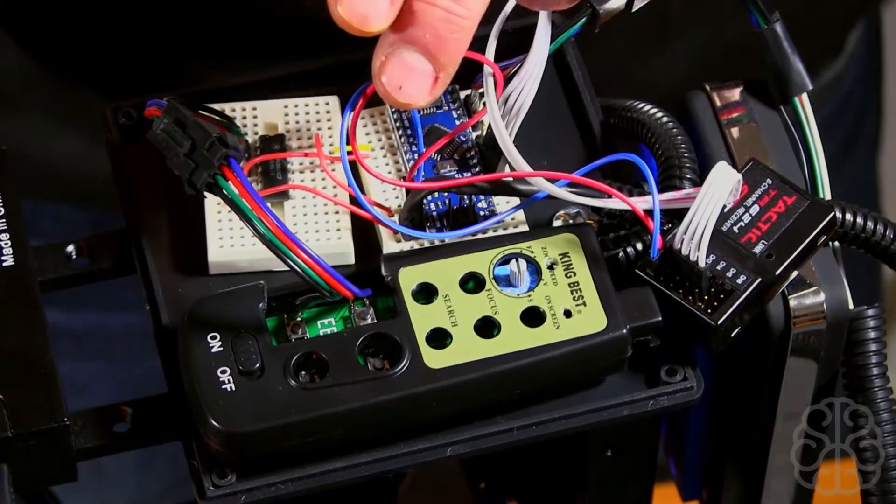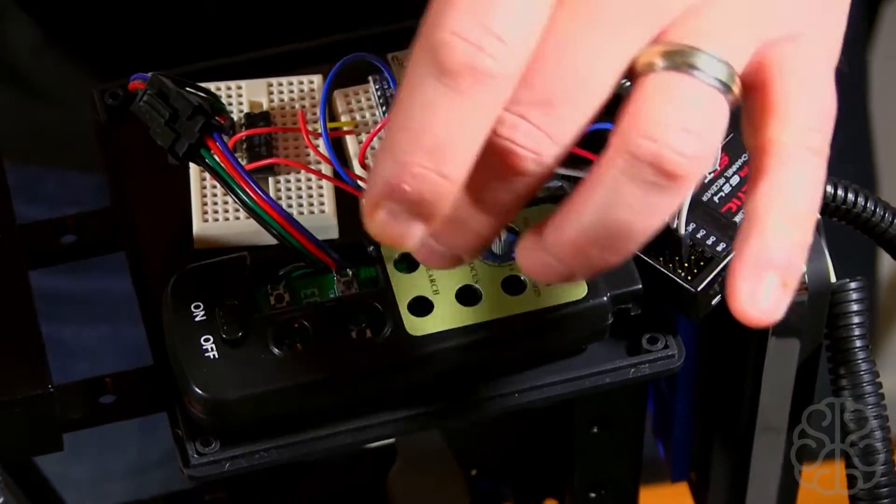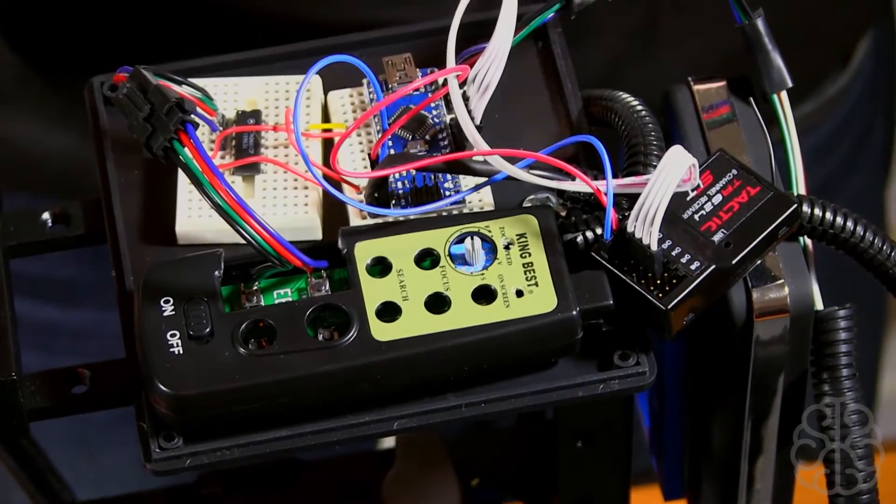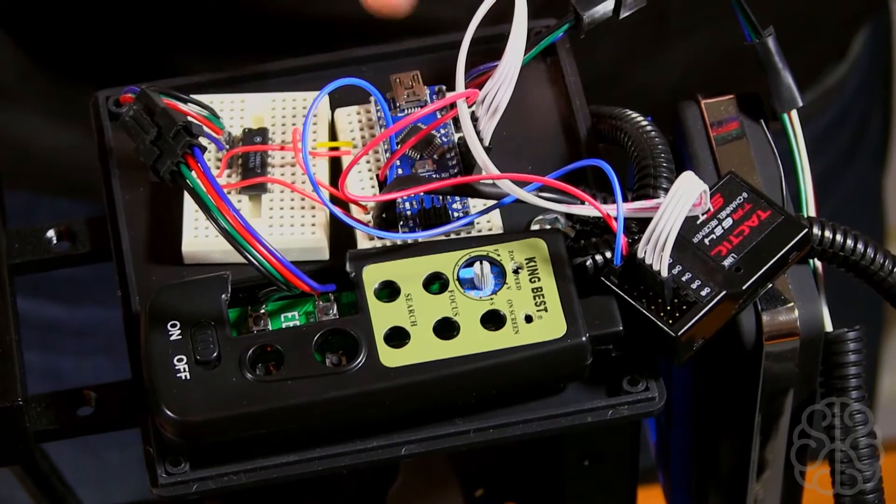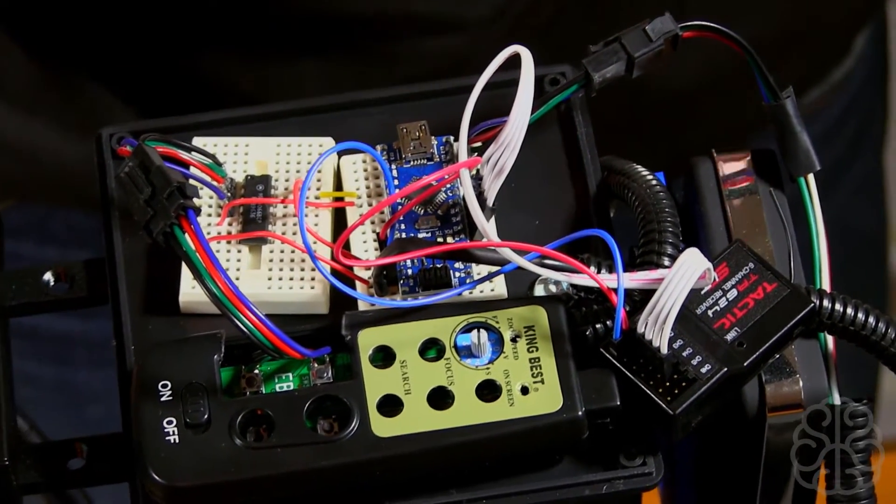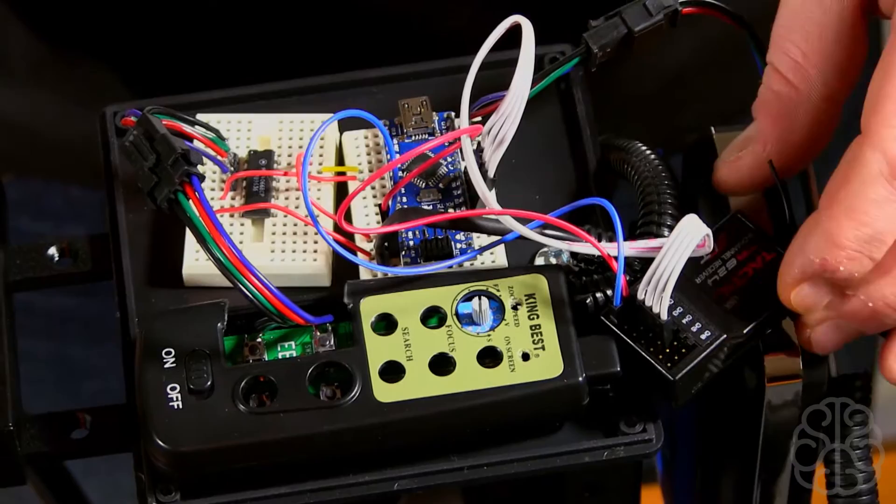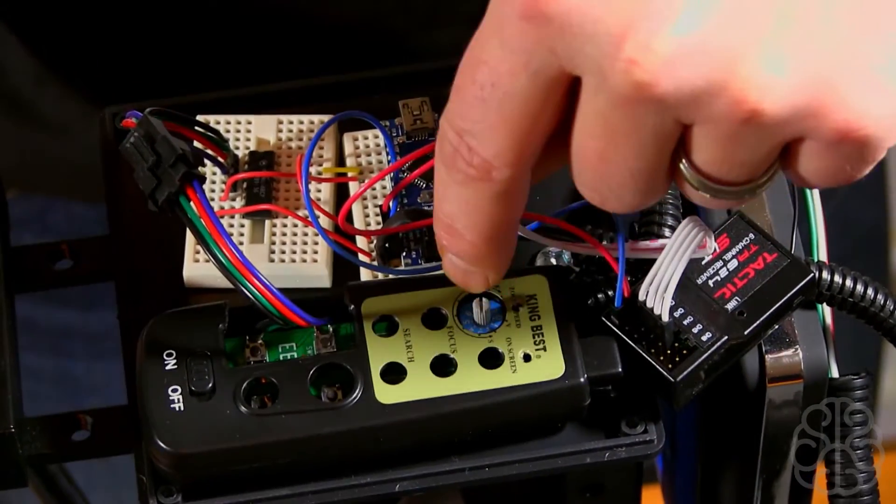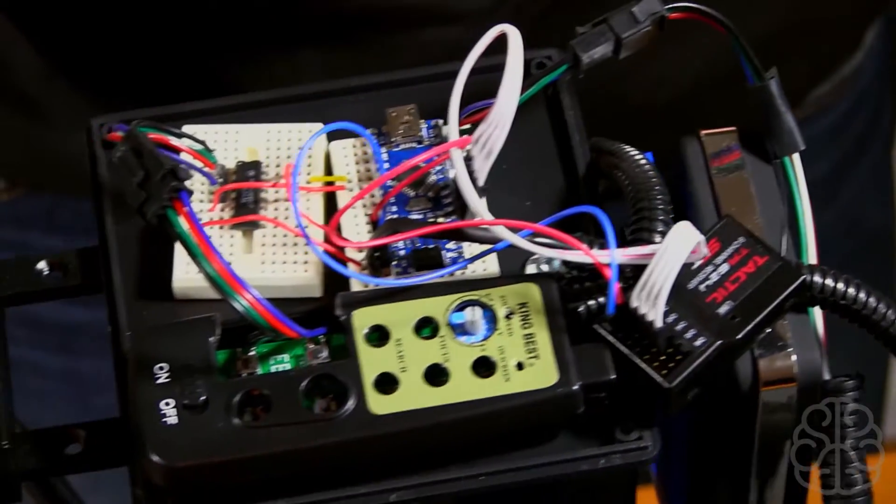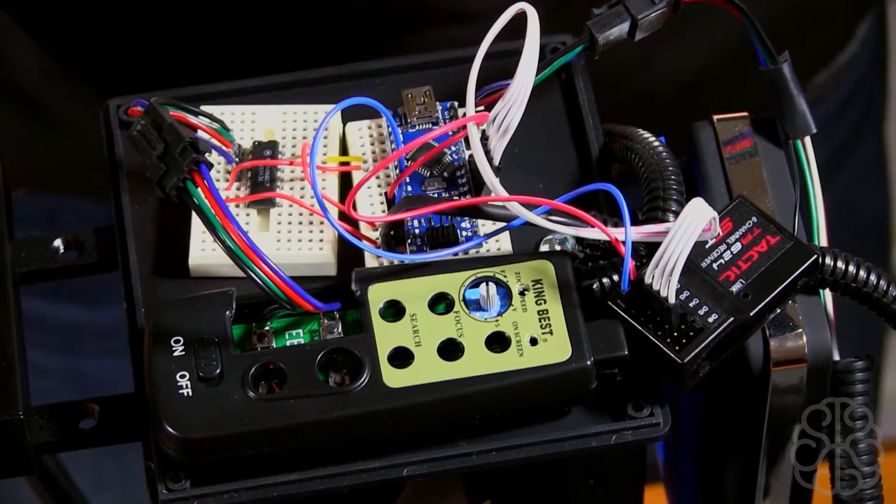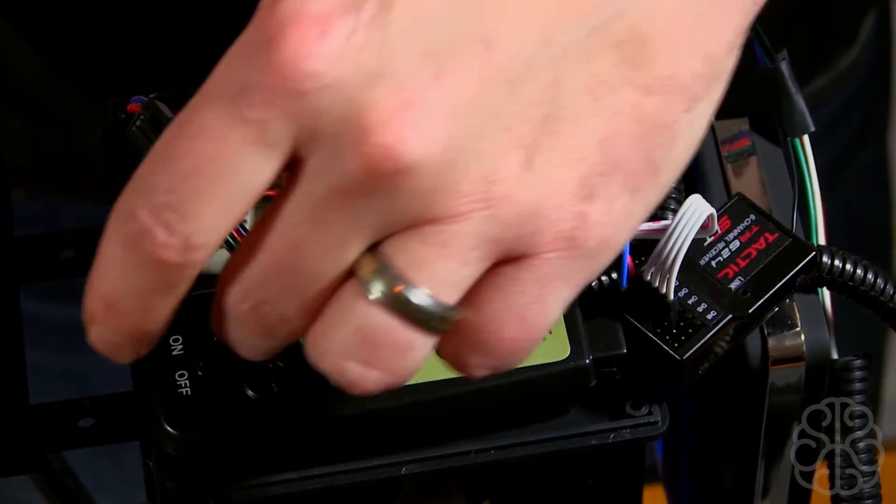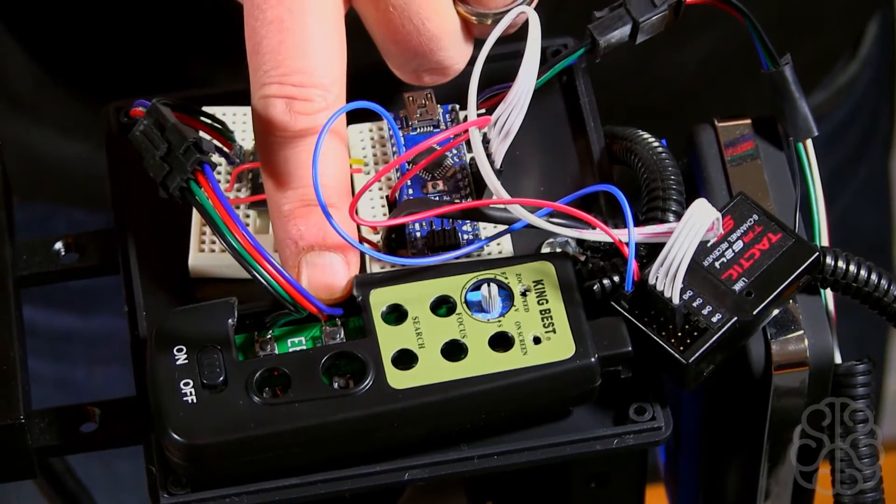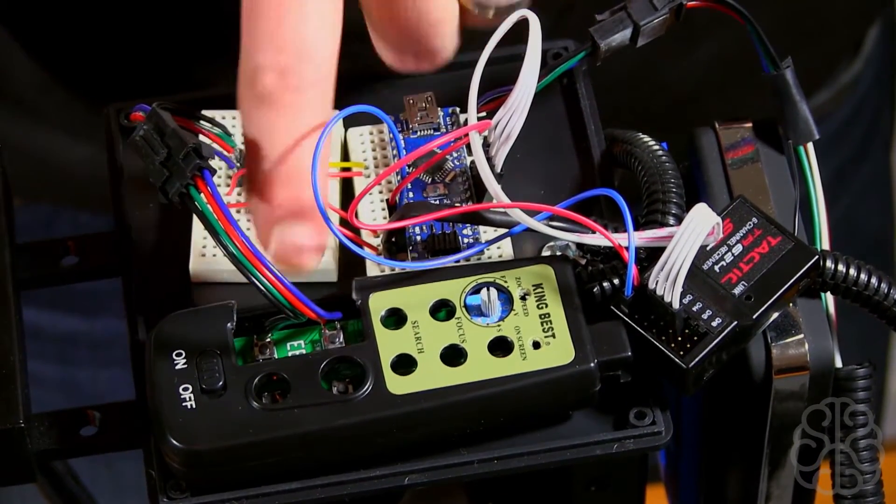This is the remote, the Banc LANC remote. This little remote is like 30 bucks. I could have programmed the LANC protocol using the Arduino, but I didn't want to do that. It seemed flaky and would have taken a lot of time. The little pot at the top controls the speed of the zoom. Then you have these two buttons here which are the zoom.